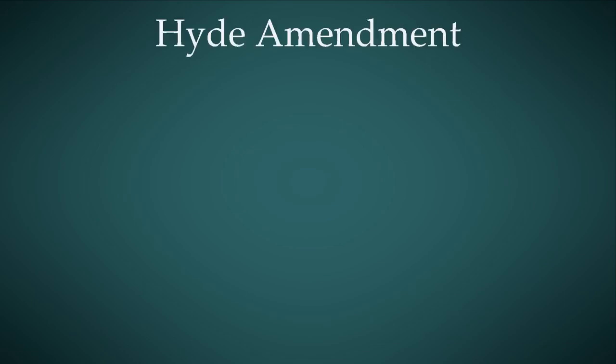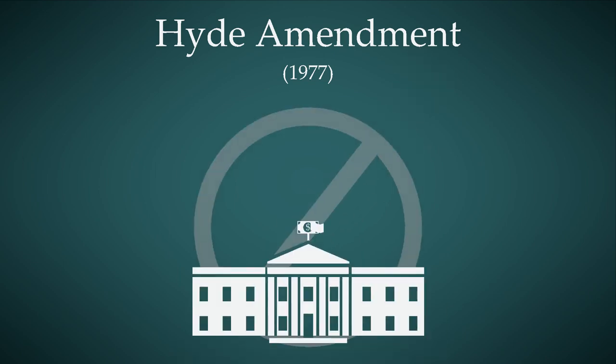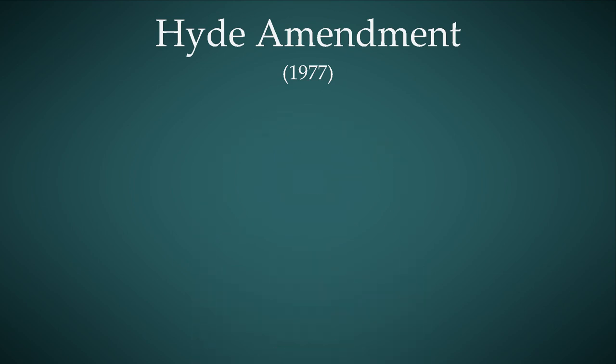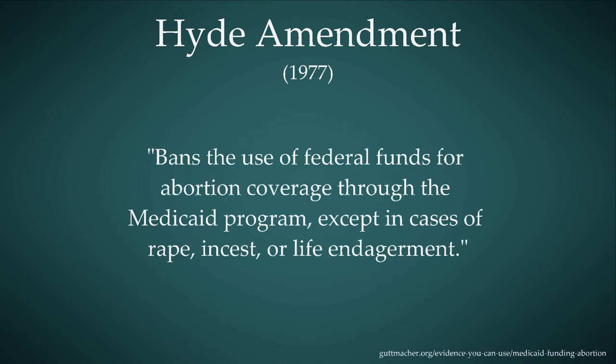The Hyde Amendment, which was passed in 1977, is basically an attempt to restrict federal funding or taxpayer money that goes towards abortions. The most common form of this is through the Medicaid program. It essentially says if you're on Medicaid you cannot use that to pay for abortion, except in three extreme cases — so it's not true that it never pays for abortion, it just doesn't in most cases.